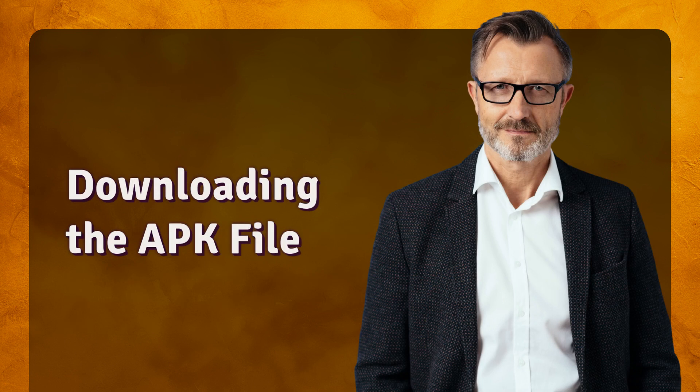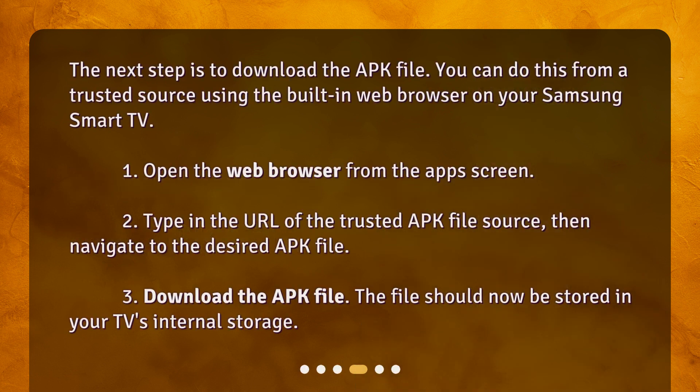Downloading the APK file. The next step is to download the APK file. You can do this from a trusted source using the built-in web browser on your Samsung Smart TV. 1. Open the web browser from the app screen. 2. Type in the URL of the trusted APK file source, then navigate to the desired APK file. 3. Download the APK file. The file should now be stored in your TV's internal storage.